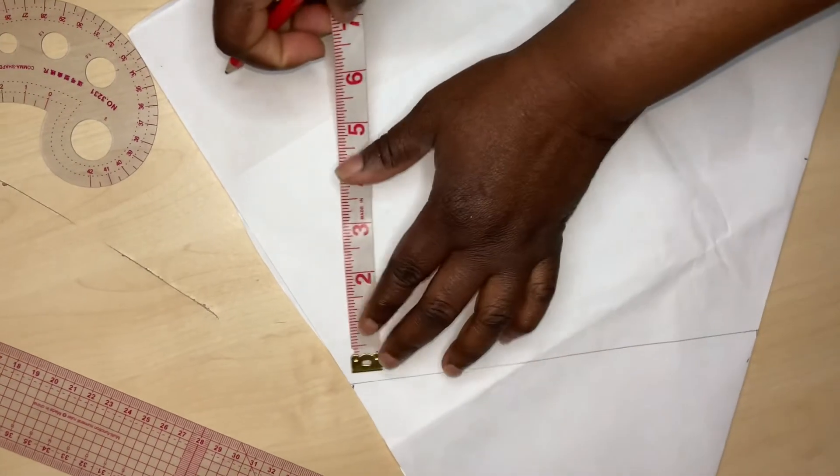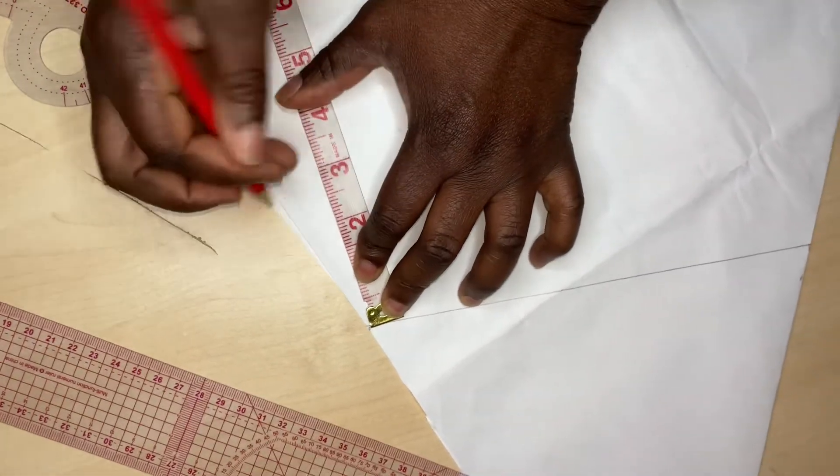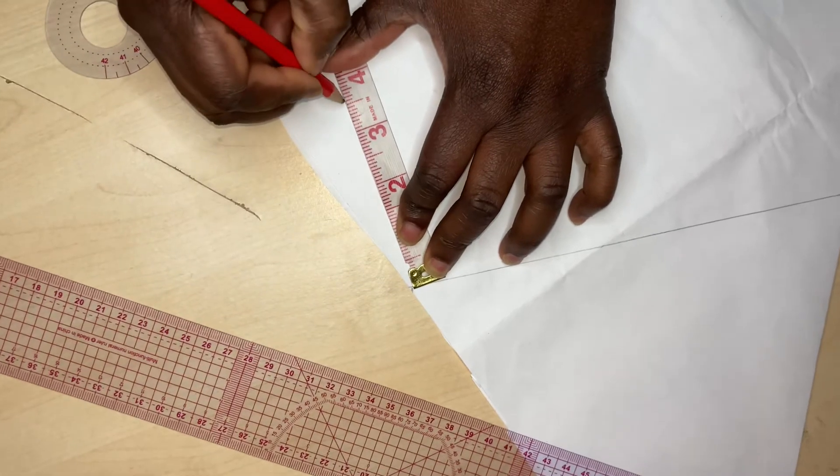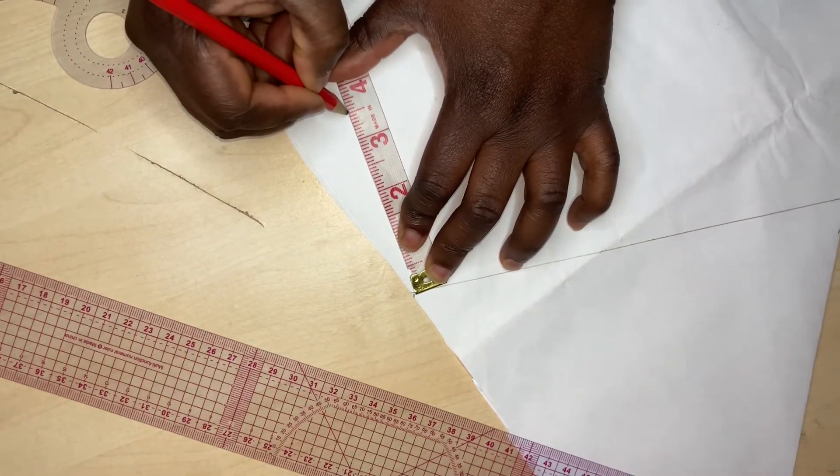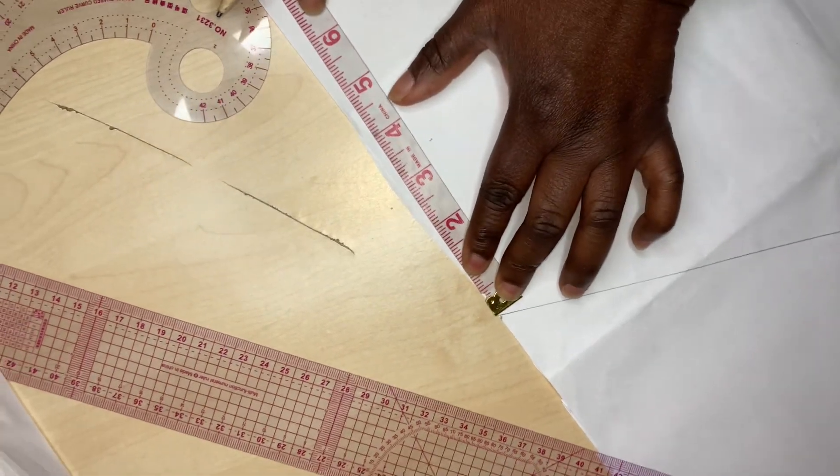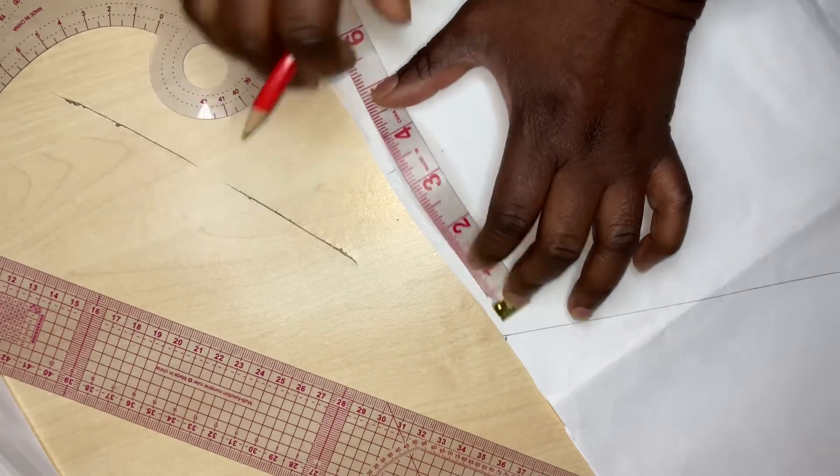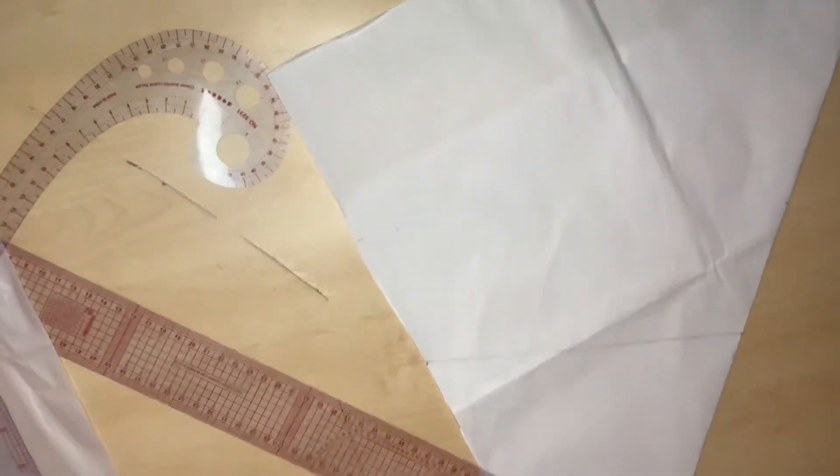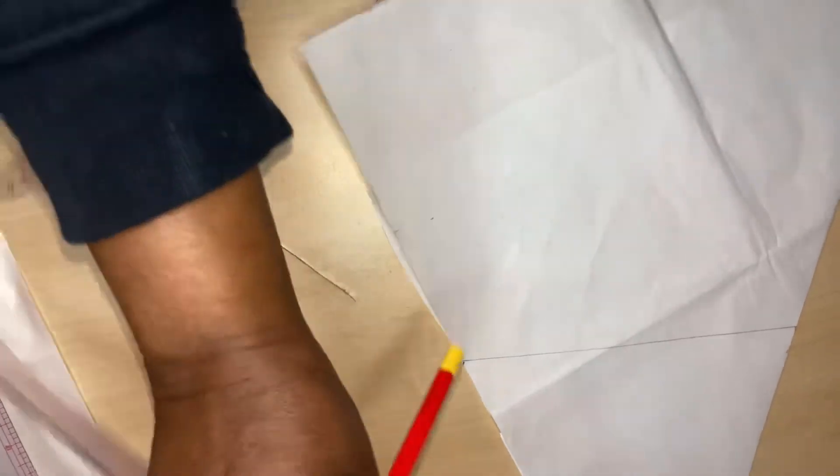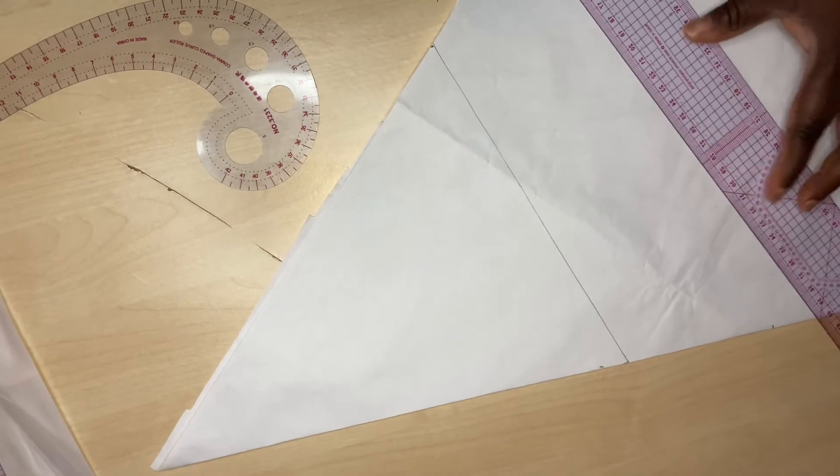So my 3.6 will be here. You measure your cup height. If yours is 4, you can measure it 3.6. Now you are going to connect the line together. Connect the 3.6 together.